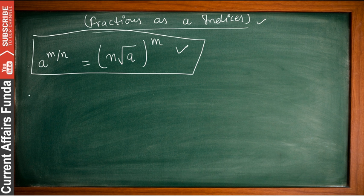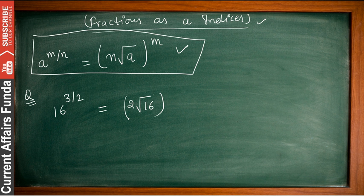Suppose you have a question like 16 to the power 3 by 2. That means the 2nd root (square root) of 16, raised to the power 3. The square root of 16 is 4, and 4 to the power 3 is 64. So the answer is 64.